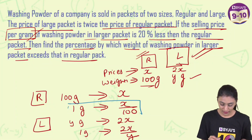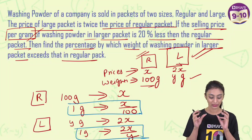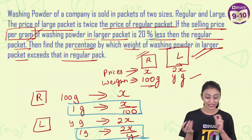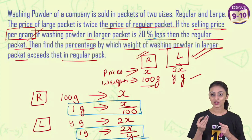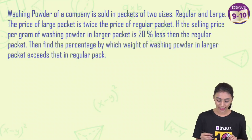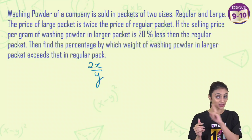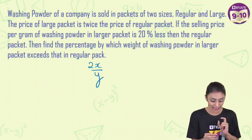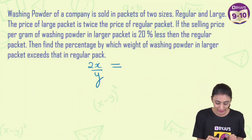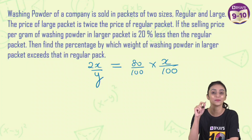We are comparing the per gram prices of the regular and larger packets. We know the larger one is always sold at a price 20 percent less than the regular one. So if the regular is sold at 100, the larger is sold at 80. Therefore: 2x/y equals 80 percent of x/100, which is the selling price per gram for the regular packet.